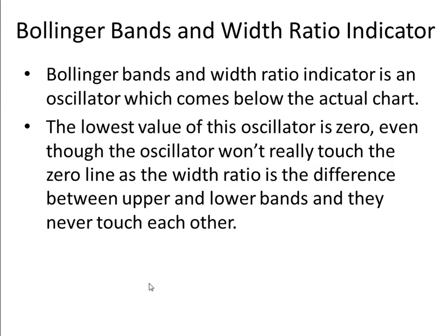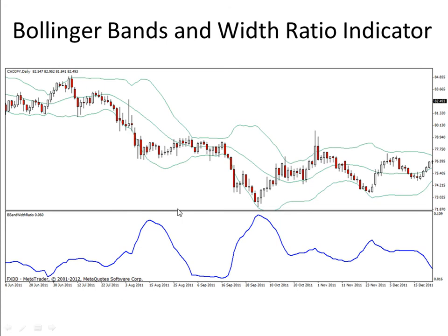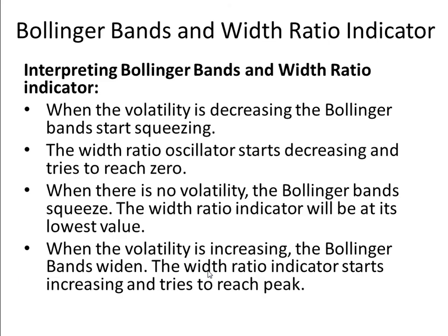The Bollinger Bands Width Ratio indicator is an oscillator that appears below the actual chart. The lowest value of this oscillator is zero, though the oscillator won't really touch the zero line, as the width ratio is the difference between the upper and lower bands and they never touch each other. This indicator shown below the price chart is the Bollinger Bands Width Ratio indicator.